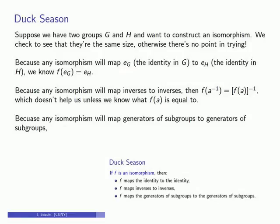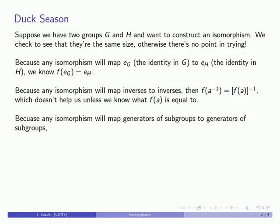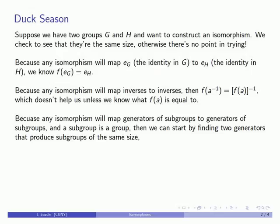Here's a useful idea in mathematics that we've referred to before: anything you can do once you can do as many times as you need to. A subgroup is a group. It lives in a larger group, which is why it's called a subgroup, but it's a group. And if I have an isomorphism, that means I have to be able to map groups of the same size to each other. So what I might try to do is to look for two generators that produce subgroups of the same size and map the generator of one subgroup to the generator of the other subgroup.